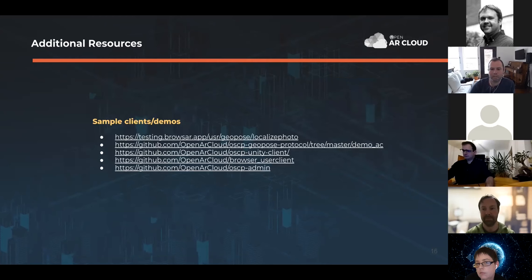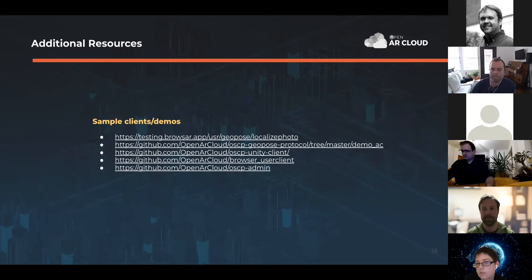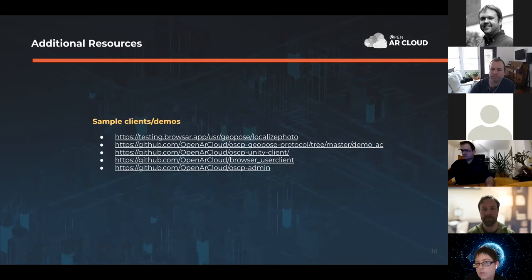For spatial content discovery, there's also a repository for the core service and client library with a running prototype. To create new data you need an account, but anyone is able to read the data to understand the current model. The draft specification for GeoPose will be presented at the Open Geospatial Consortium's GitHub repository, which has been shared in the chat.